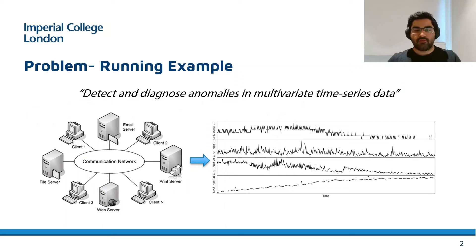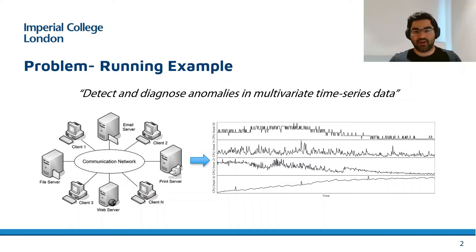We define our problem as detection and diagnosis of anomalies in multivariate time series data. An anomaly here means any pattern in the data that does not conform to expected behavior or trends. And this may arise, for instance, in the form of cyber intrusions or other unexpected events.